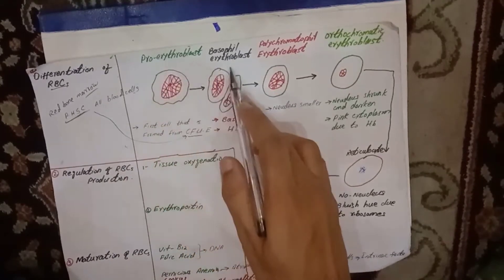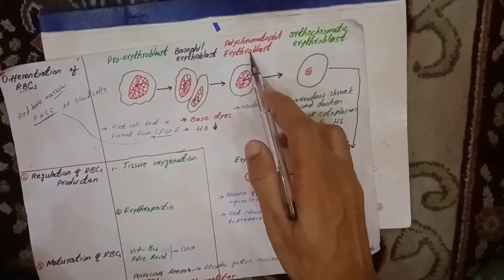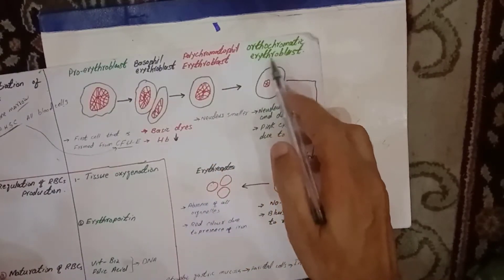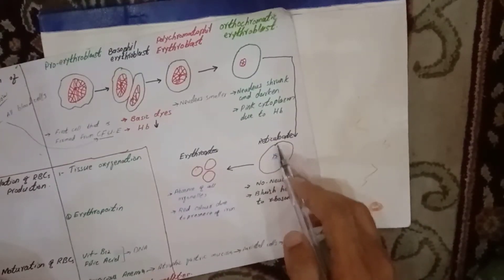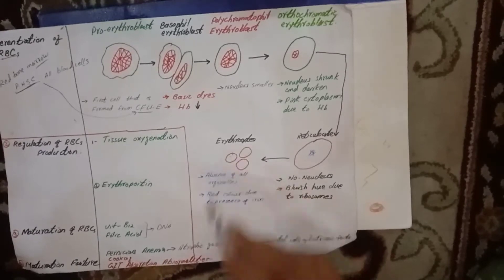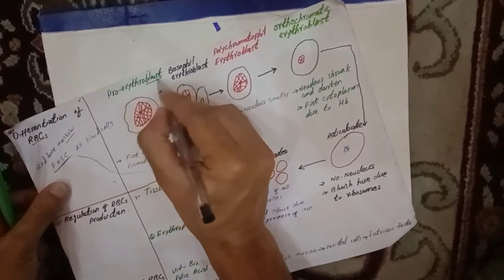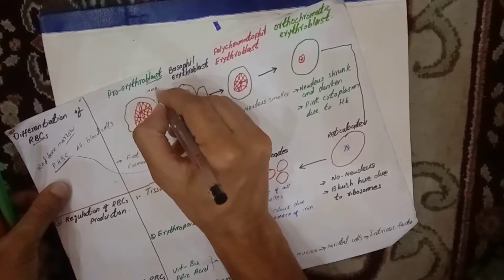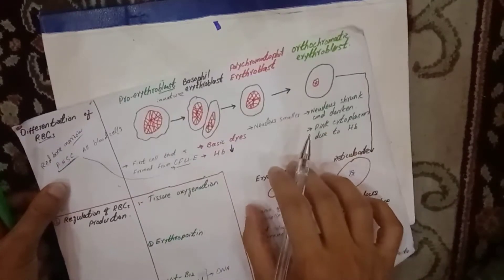The six stages are: number 1, pro-erythroblast; number 2, basophil erythroblast; number 3, polychromatophil erythroblast; number 4, orthochromatic erythroblast; number 5, reticulocyte; and number 6, erythrocyte — the mature red blood cell. We use the term 'blast' for immature cells, so all these earlier cells are immature.